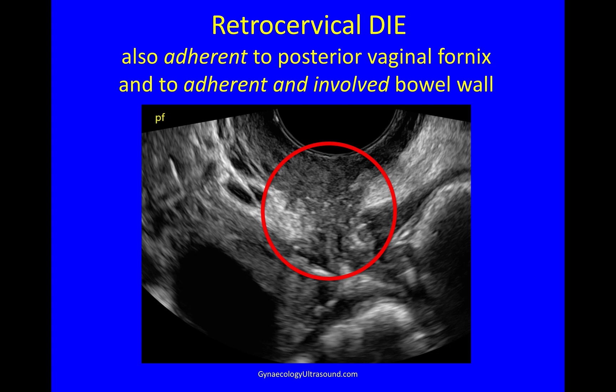There's the nodule of DIE at the torus, there is the attached but not involved posterior vaginal fornix, and here is the bowel wall.